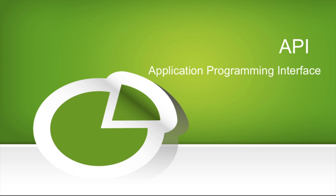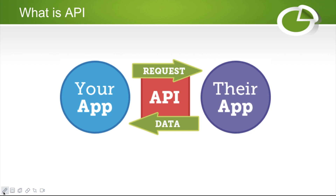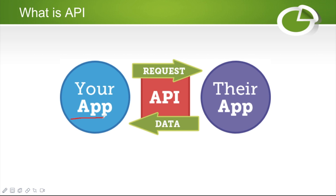API stands for Application Programming Interface. The benefit of API is: suppose you are building an application and you need some user details from a different website. You can send a request to that third-party application, they process your request, and based on that they send the data back, which you can utilize in your application.